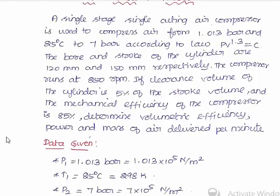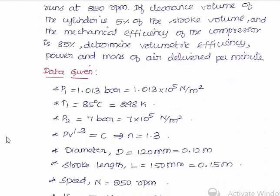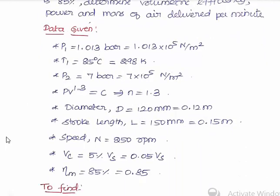Converting all data to SI units: P1 = 1.013 × 10⁵ N/m², T1 = 298 K, P2 = 7 × 10⁵ N/m², polytropic index n = 1.3, diameter of cylinder D = 0.12 m, stroke length L = 0.15 m, speed N = 250 rpm, and clearance volume Vc = 0.05 Vs.